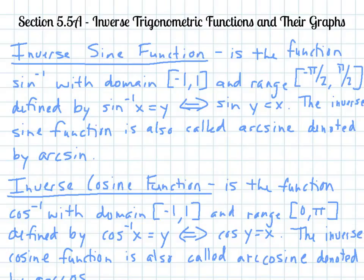So here, inverse sine is the function sine to the negative first power, with domain from negative 1 to 1, including those two points, and a range from negative pi over 2 to pi over 2, including those two values, defined by the inverse of sine of x equals y, which is the same thing as saying sine of y is equal to x.